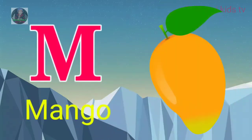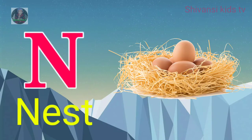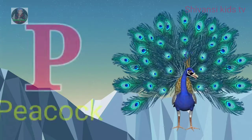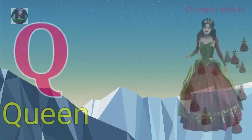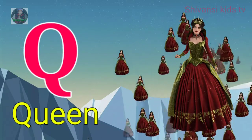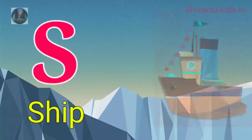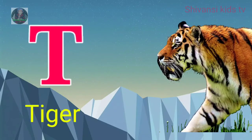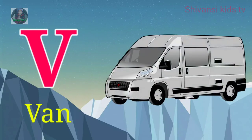M for mango, N for nest, O for orange, P for peacock, Q for queen, R for rabbit, S for sheep, T for tiger, U for umbrella.